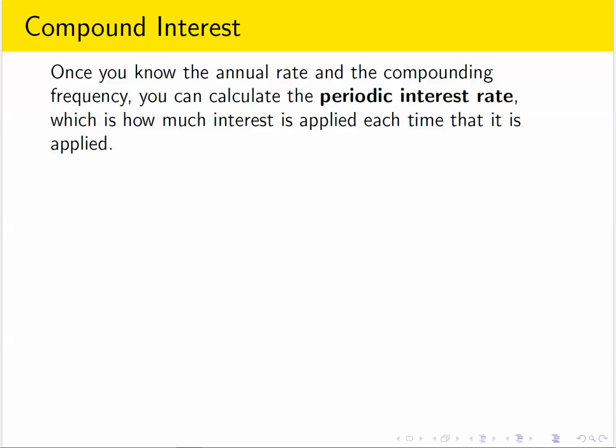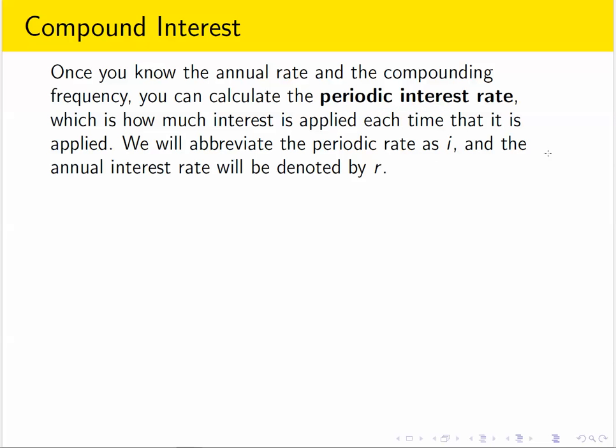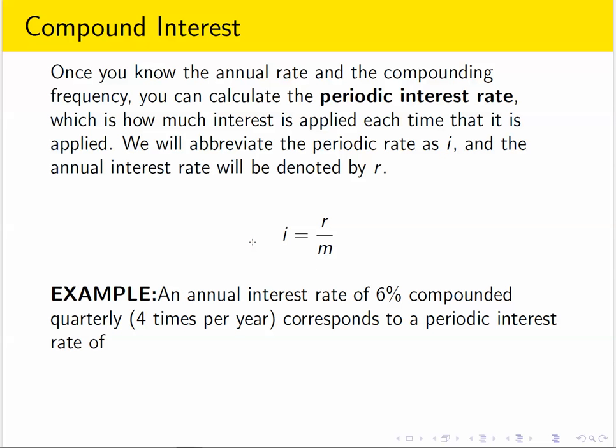Once you know those things, you can calculate the so-called periodic interest rate, how much money you get each time you get interest. We will abbreviate the periodic interest rate as i and the annual rate by r in order to tell them apart. So in order to calculate the periodic rate, you do what we've been describing. We take the annual rate that's advertised and divide it by how many times interest is applied each year. For example, if you have an annual rate that's advertised as 6% compounded four times per year, you take 6% divided by 4, and that's how much interest is applied each period, 1.5% each quarter.